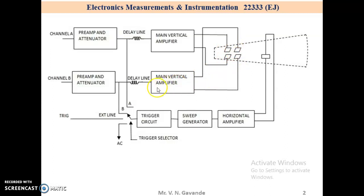Now which signal you want to trigger depends on channel A trigger, channel B trigger, or external line AC line. Similarly the horizontal deflection system consists of trigger circuit, sweep generator or time base generator, and horizontal amplifier.